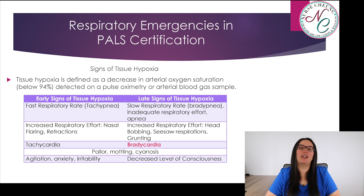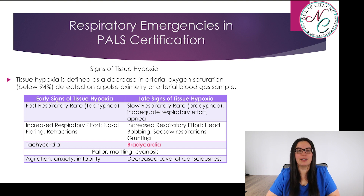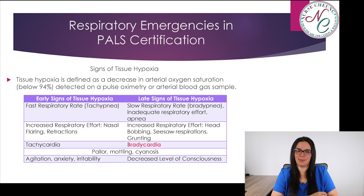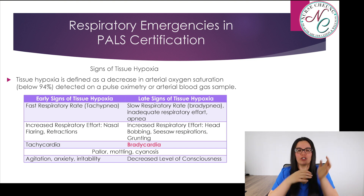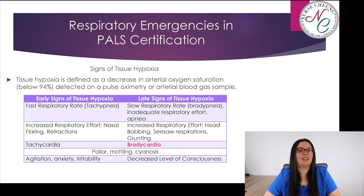Let's look at the early and late signs of tissue hypoxia. Tissue hypoxia is defined as a decrease in arterial oxygen saturation below 94%, detected on pulse oximetry or arterial blood gas sample. Early signs include fast respiratory rate — tachypnea — increased respiratory effort such as nasal flaring and retractions, or tachycardia. Agitation, anxiety, and irritability are also noted.